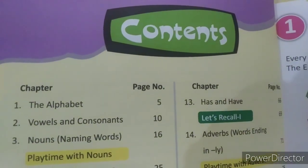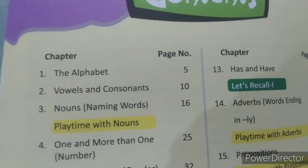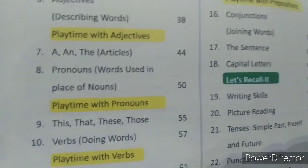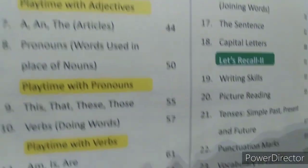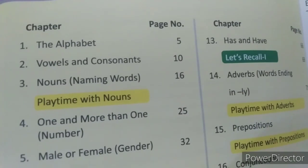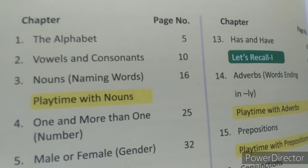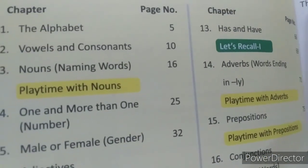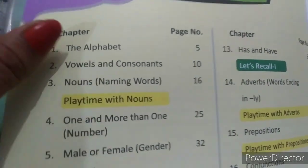Let's have a look at our contents. Here students, you can see there are chapters 1 to 23 — 23 chapters in total. And students, as you know there are four exams in a year: first unit test, half yearly, then second unit test, and then annual exam. So in your first unit test, how many chapters will come in English first? Three — chapters 1, 2, and 3.